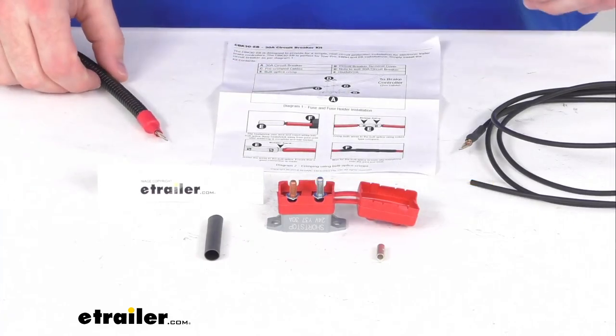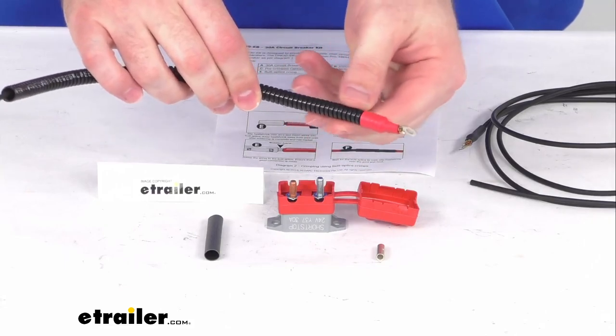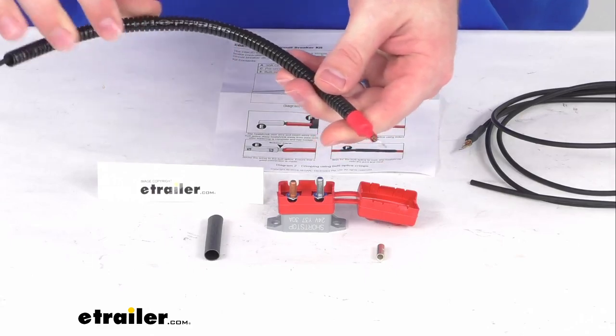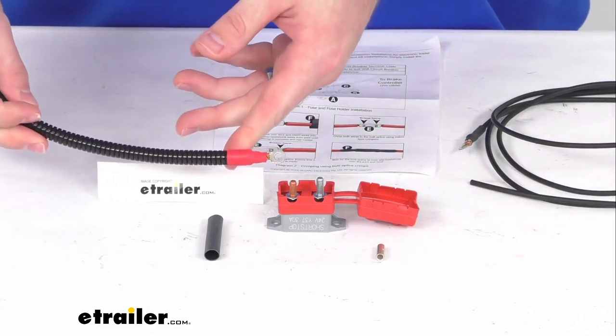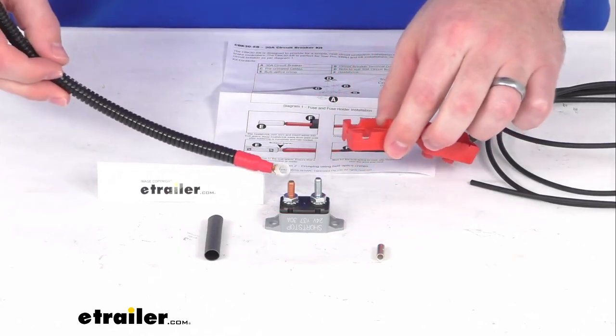It does come with the connection wires that are pre-crimped and heat shrunk to ensure that they have nice durability and performance. You're just going to have to connect the wires to your circuit breaker with the included nuts.